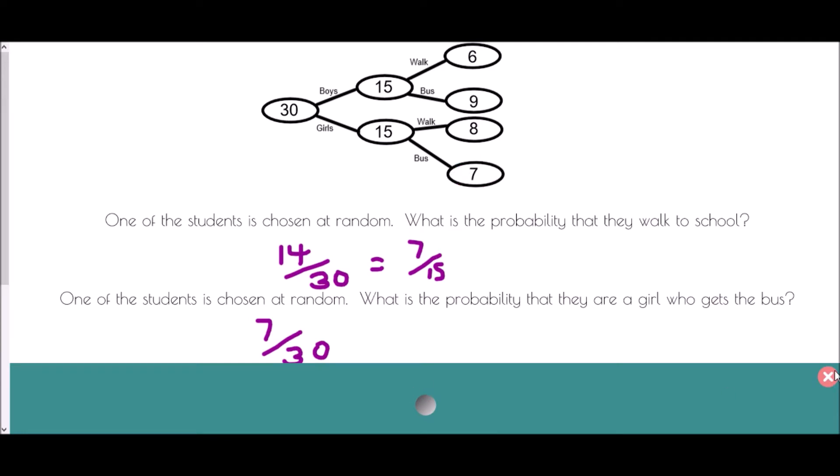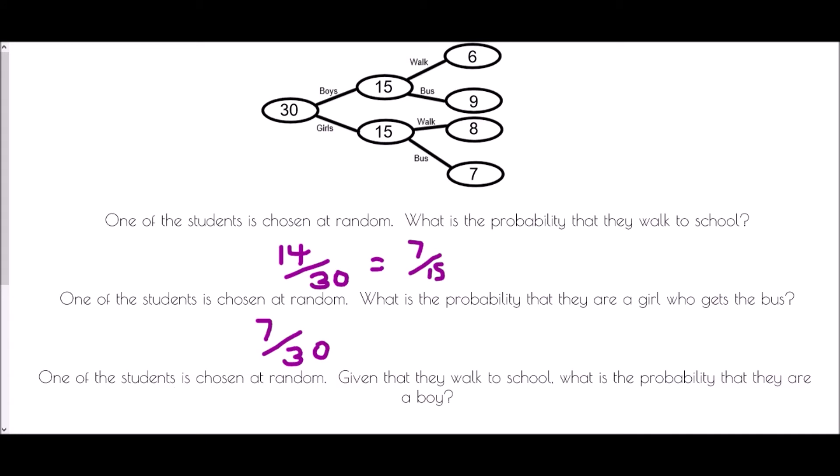The last section. One of the students is chosen at random. Given that they walk to school, what is the probability that they are a boy? Now, this phrase is important. We've been told, given that they walk to school, what that means is we are looking at only the students who walk. And so there are eight girls and there are six boys. That means there are 14 students who walk. And so this time our probability is only out of 14.